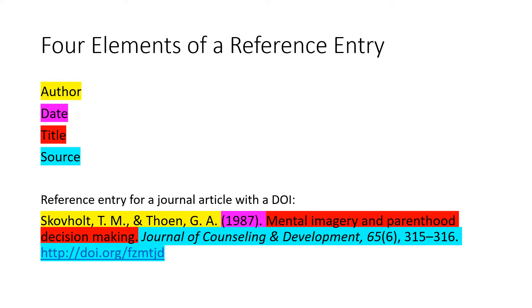Let's look at what information is required in an APA reference entry. There are four basic parts: the author, the date, the title, and the source information. I've highlighted each part so that you can see which section is related to each element — the author, the date, the title, and the source for a journal article.